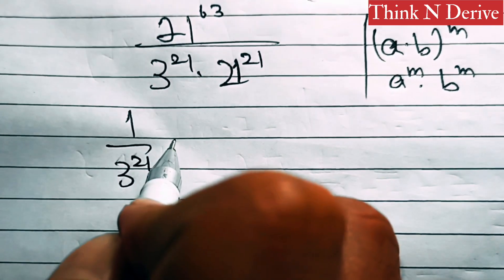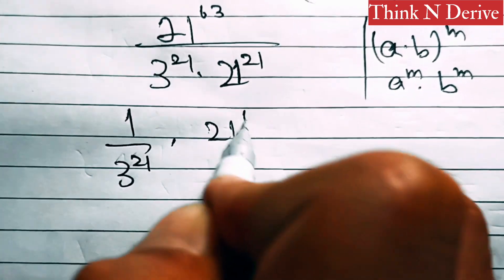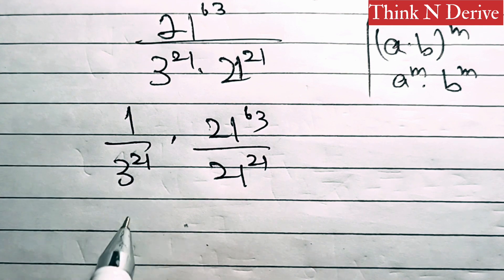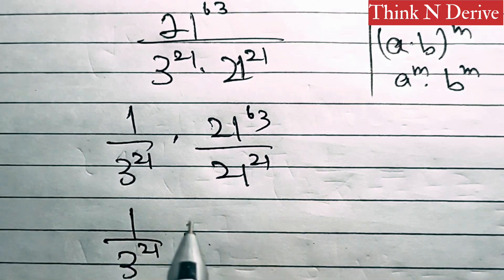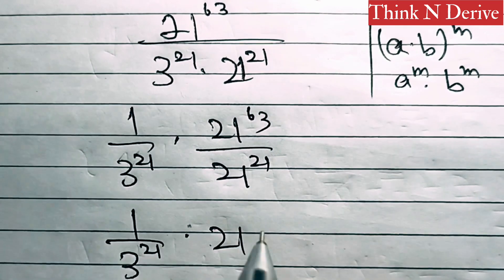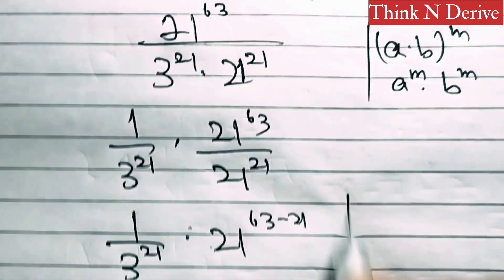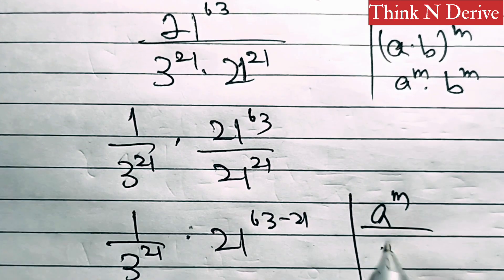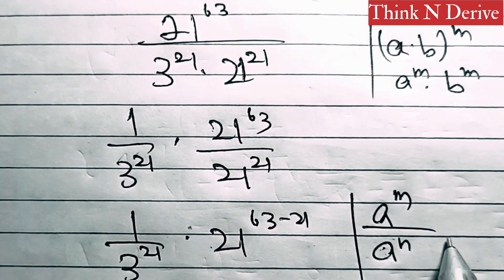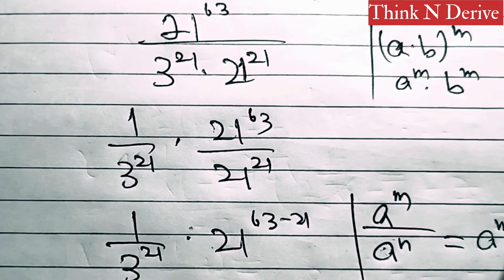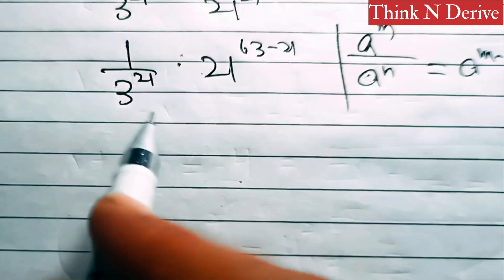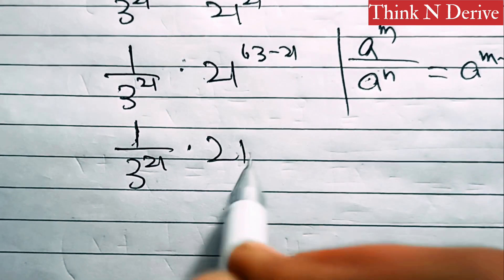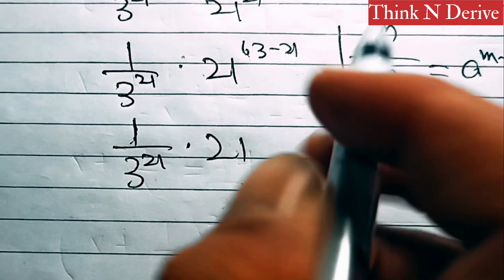So now we write this as 1 over 3 power 21, times 21 power 63 over 21 power 21. This simplifies to 1 over 3 power 21, times 21 power (63 minus 21), because we know a power m over a power n is equal to a power (m minus n).